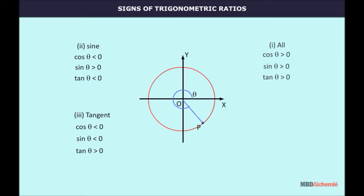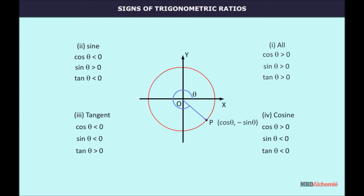In the fourth quadrant, theta lies between 270 degrees and 360 degrees. Then A is positive and B is negative, and OP is positive. The coordinates of point P are (cos theta, −sine theta). Therefore, sine theta is negative and cos theta is positive, and so tan theta is negative.